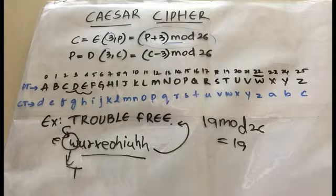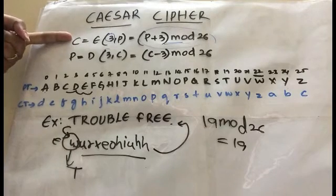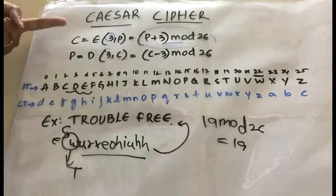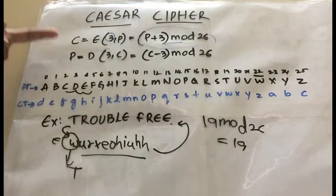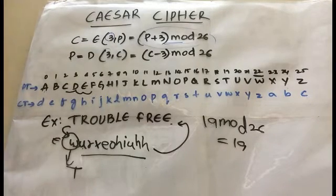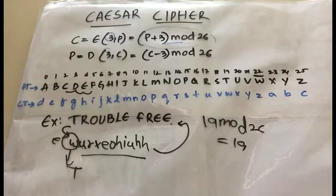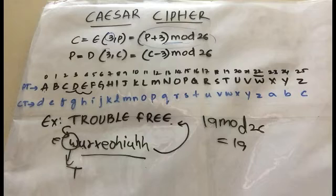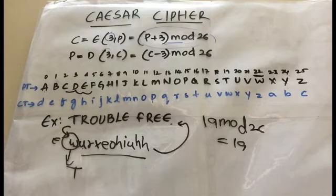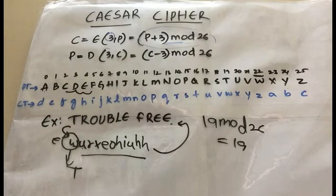That's all for this video on Caesar cipher. For encryption use C = (P + 3) mod 26, and for decryption use P = (C - 3) mod 26. In the next video we'll be learning about Playfair cipher, Hill cipher, and one-time pad. Please subscribe, share with your friends, and hit the like button if this was helpful. Check the description for links to previous videos.